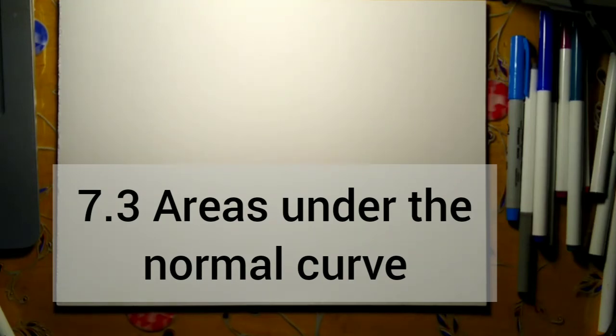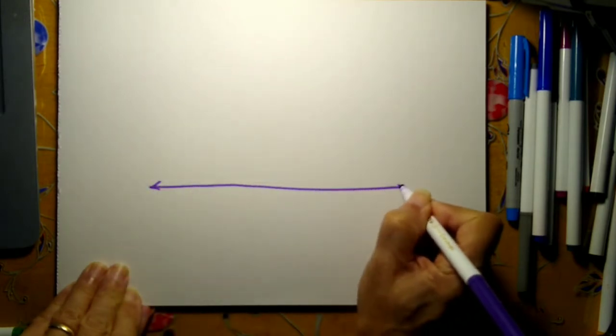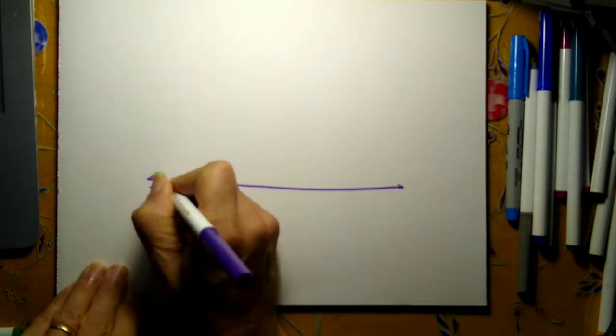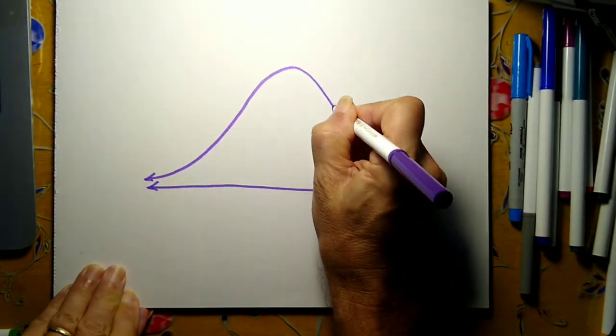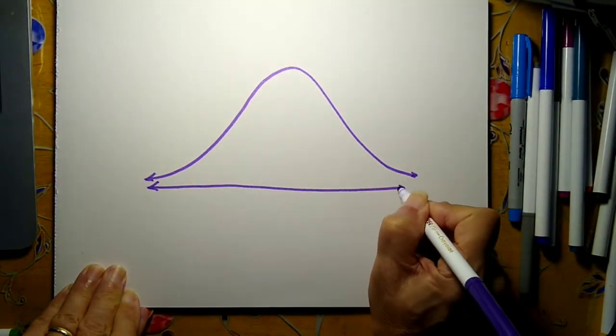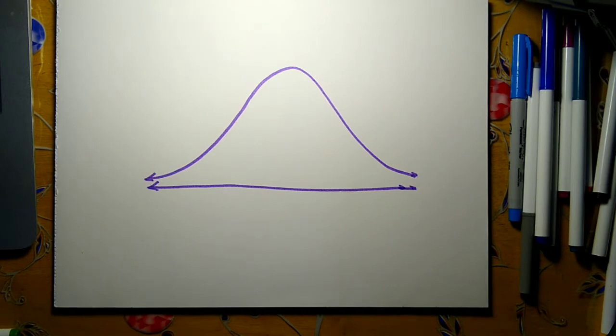In section 7.3, I introduce the idea of areas under the normal curve. In the earlier section 7.1, I introduced the idea that any randomly varying system will distribute in a shape that we refer to as the normal curve, this bell shape, this symmetric peak shape.